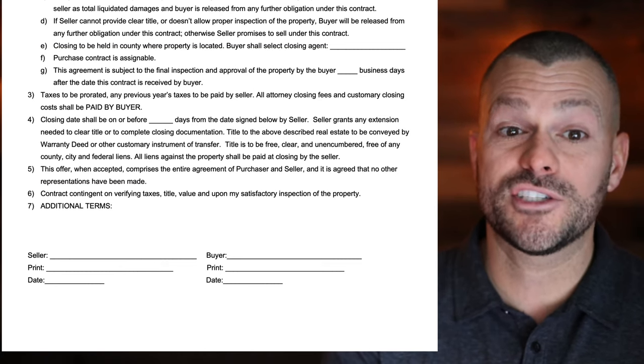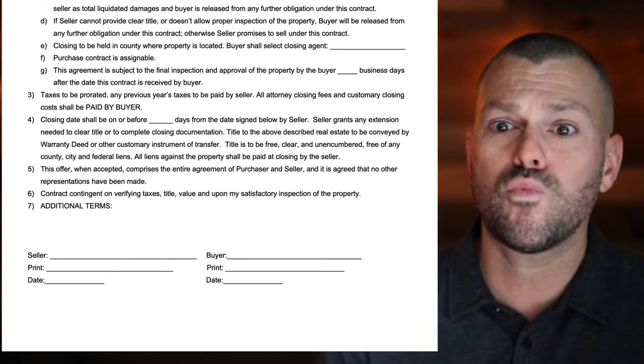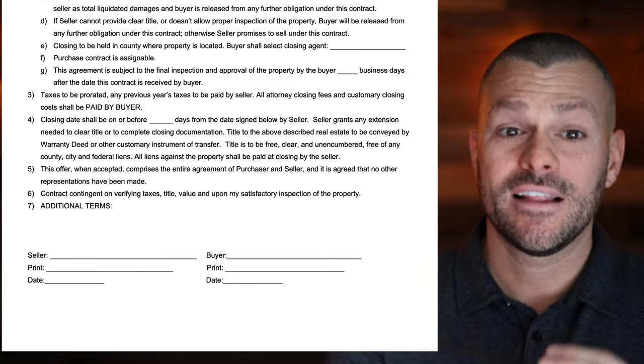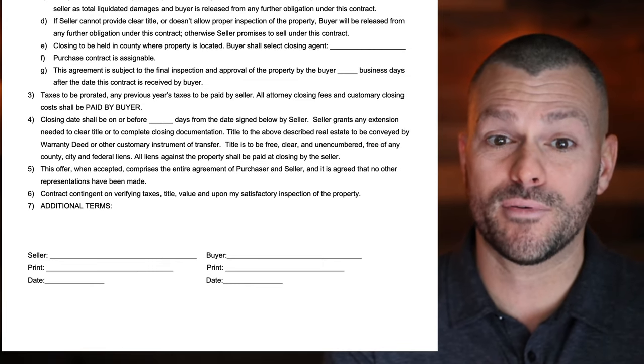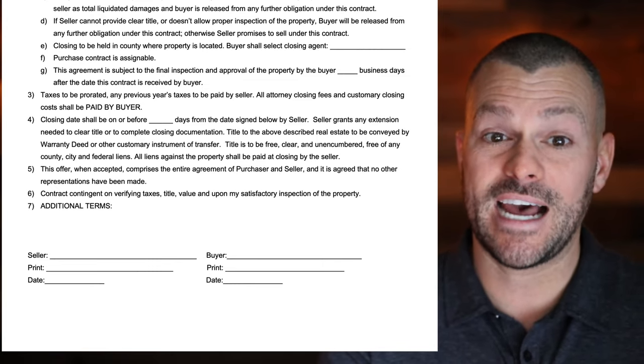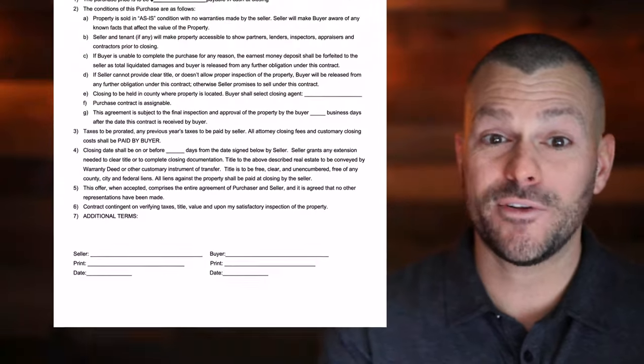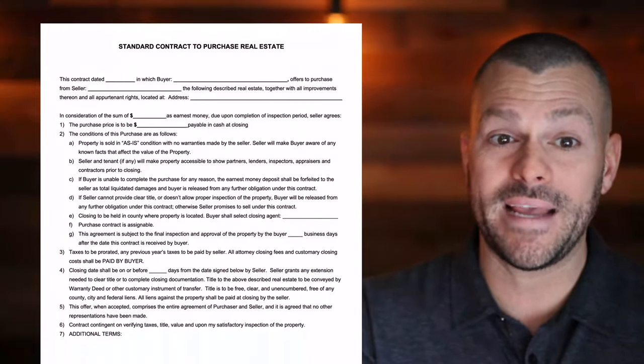Number seven is additional terms and conditions — you can write anything in here. Last but not least, seller can sign, print, and date; buyer can sign, print, and date. And that's really it. It is a very simple, basic contract. You can download it in this module below this video, or scroll down to the resources and growth tools — there's a section with this contract and a couple other really awesome tools.